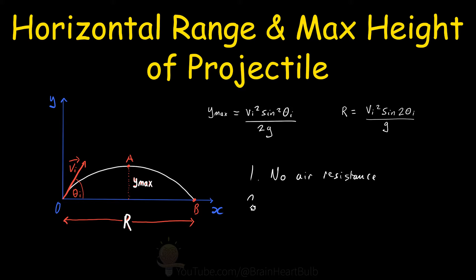Secondly, we're going to assume that the freefall acceleration is constant over the entire range of flight. In other words, the direction of g doesn't change along the entire range of flight — the acceleration vector is always pointing down at 90 degrees to the horizontal. This can only be the case if we work at short ranges where the curvature of the Earth is negligible.